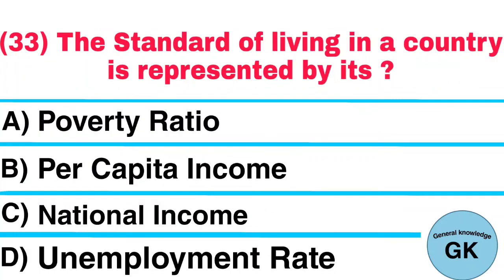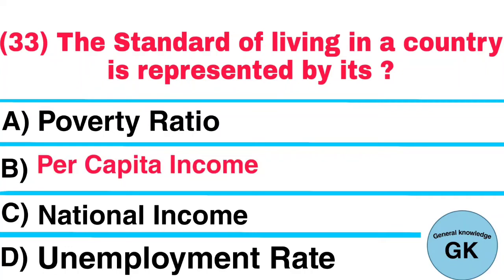Question number 33. The standard of living in a country is represented by its: A. Poverty ratio, B. Per capita income, C. National income, D. Unemployment rate. Answer: Per capita income.